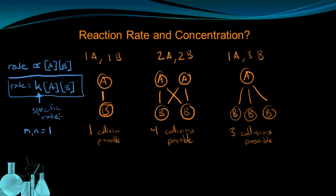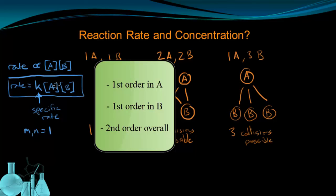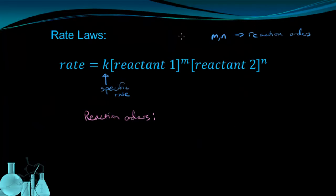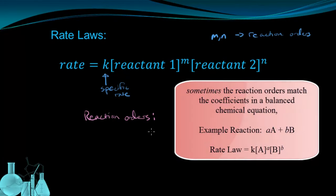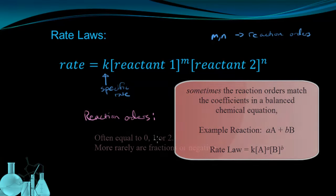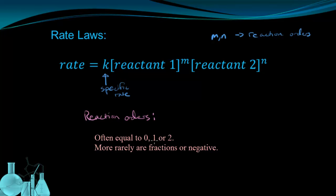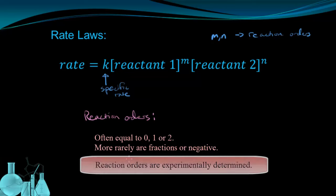We can say the reaction is first order in A because A has an exponent of 1, and first order in B because it also has a reaction order of 1. The last thing we can say is that this reaction is second order overall — you add up all the reaction orders for the reactants in the rate law to get the overall order. Reaction orders are sometimes the same as the coefficients in the balanced chemical reaction, but not always. They're usually 0, 1, or 2, but could be fractions or negative. Most importantly, their values are always determined experimentally for any reaction.